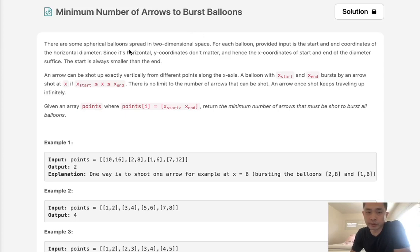There are some spherical balloons spread in two-dimensional space. For each balloon, provided input is the start and end coordinates of the horizontal diameter, so it's like the x-axis points.